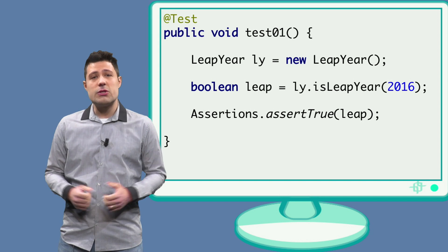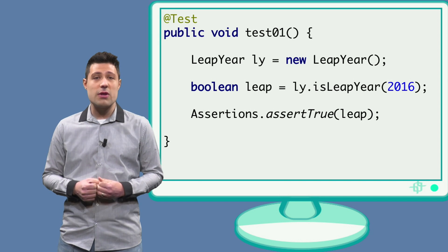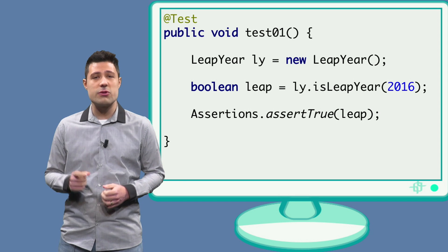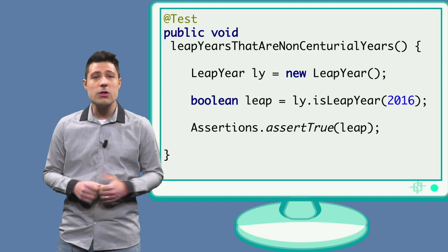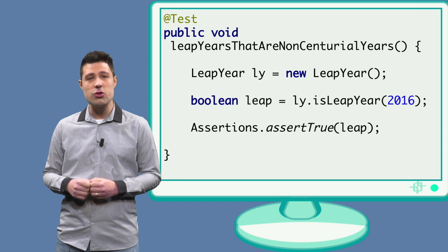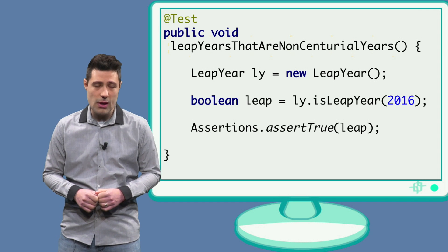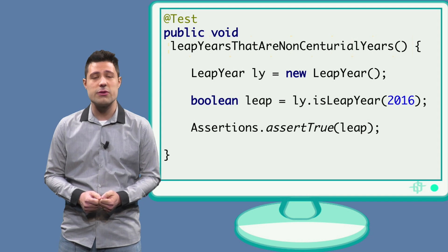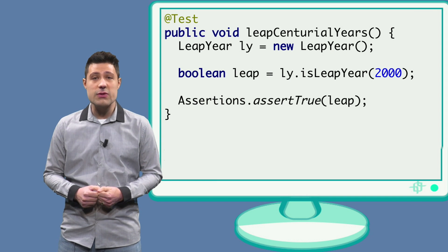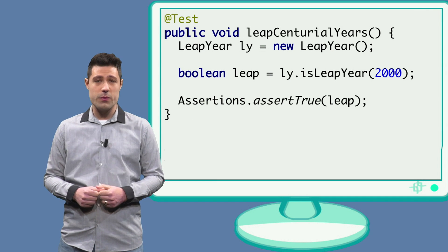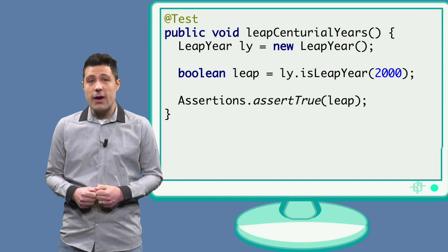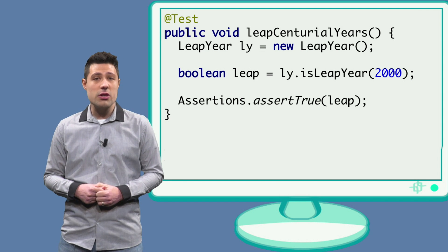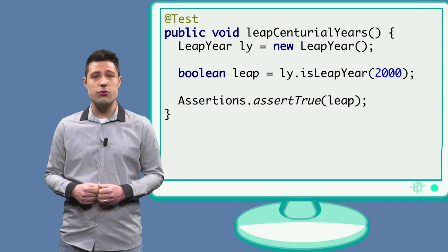One good tip is to name your test methods after the partition. So let's rename our previous test from test1 to leapYearsThatAreNonCenturialYears. The next partition is leap years that are centurial. We provide the year 2000 for the isLeapYear method, and we assert that its output will be equal to true.